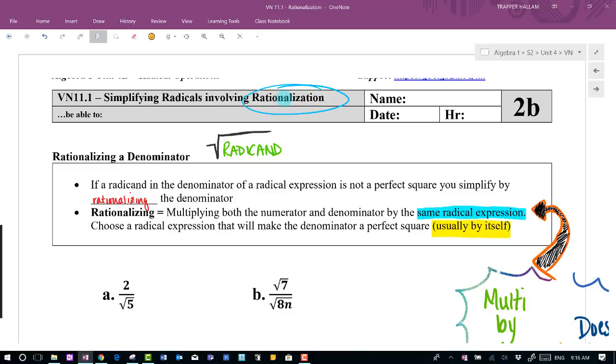So rationalization then is if we have a radical or a radicand in the bottom that doesn't have any perfect square terms, meaning that we can't get it outside of the radical, we have to have a way to get it out of the denominator. So to do that, what we do is we multiply the radical by the same expression that's in the denominator, meaning whatever it happens to be, we're going to multiply by that exact term or exact expression.